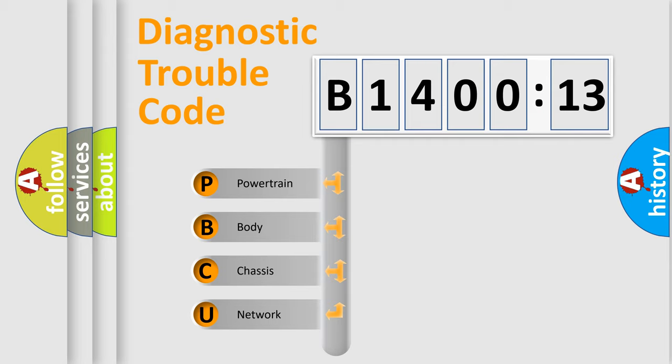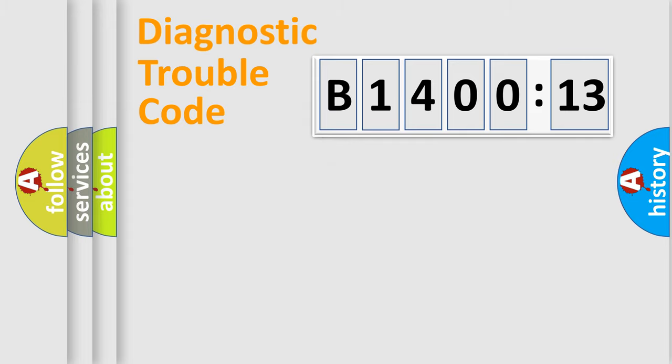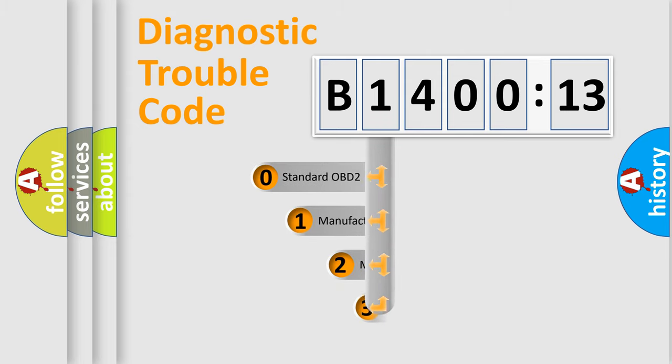We divide the electric system of automobiles into four basic units: Powertrain, Body, Chassis, and Network. This distribution is defined in the first character of the code.